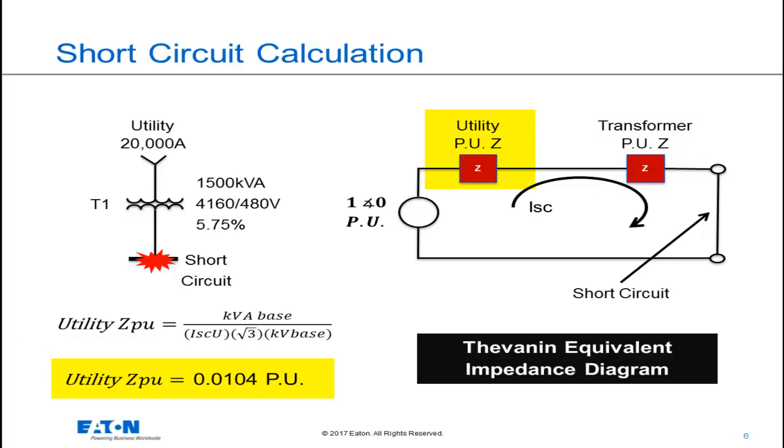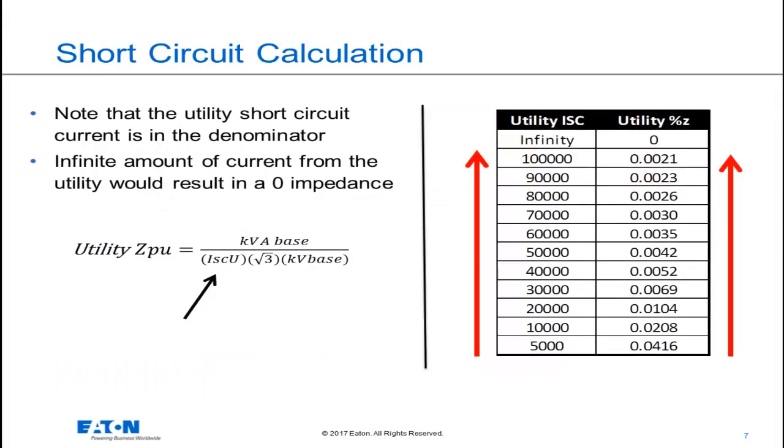The utility impedance in per unit can be calculated by the basic equation shown here. So based on this equation, the impedance for the utility in per unit is 0.0104. The short circuit current from the utility is in the denominator of this equation.